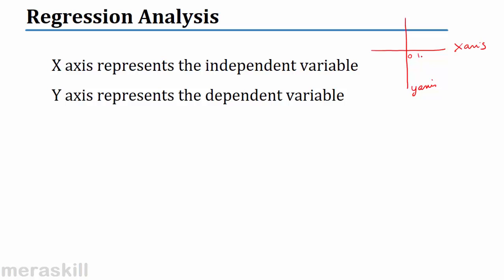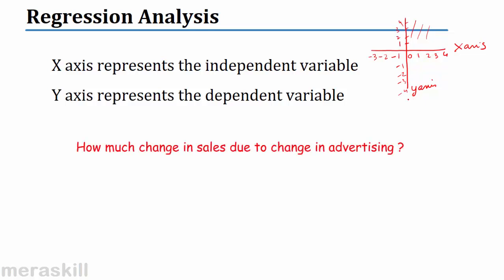The origin point is 0. Values to the right side of the x-axis are positive and to the left are negative. Similarly on the y-axis, values above 0 are positive and below are negative. So this area — where both x and y are positive — is called the positive quadrant. The x-axis will represent the independent variable while the y-axis represents the dependent variable.